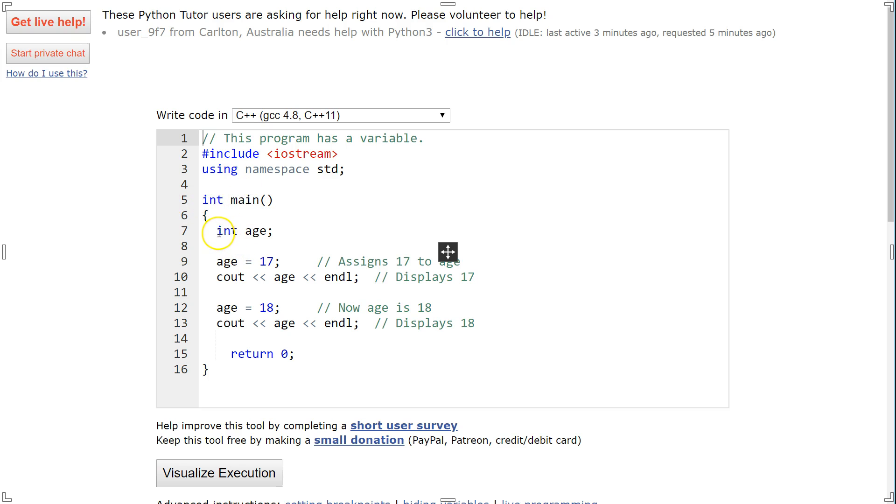At the beginning, here's our definition. We're saying this variable, name age, is going to be of type int. It's going to be an integer variable. Then on line 9, we come down here and we're saying age is going to equal 17. This assigns 17 to age. Then we're going to cout and say age, and then I just put an inline, so go to the next one. You'll see it display 17.